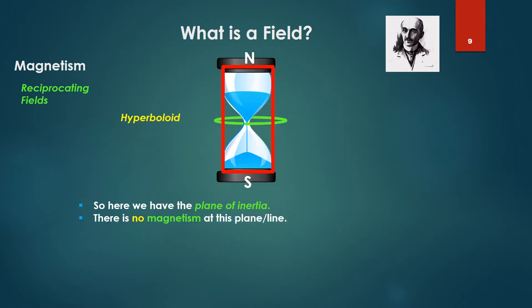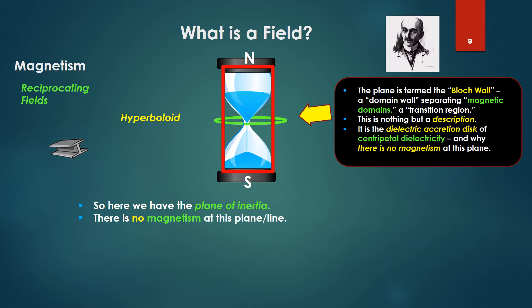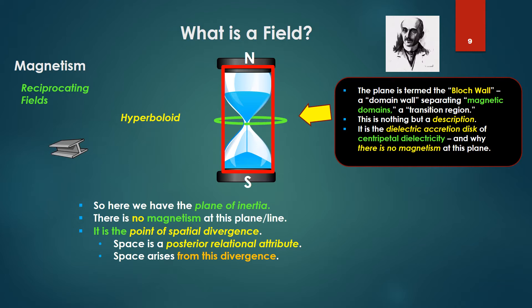Here we have the plane of inertia. There's no magnetism at this plane — if we tried to stick a little piece of iron exactly along that plane, it wouldn't stick. This plane is normally termed the block wall, called a domain wall, supposedly separating magnetic domains or a transition region. But this is nothing but a description, just a name. In reality, it's the dielectric accretion disk of centripetal dielectricity, and that's why there's no magnetism at this plane — it's pure dielectricity. It is similarly the point of spatial divergence. The donut we'd be visualizing is the expression of space or magnetism, and this plane is the point of spatial divergence into magnetism or actual space.